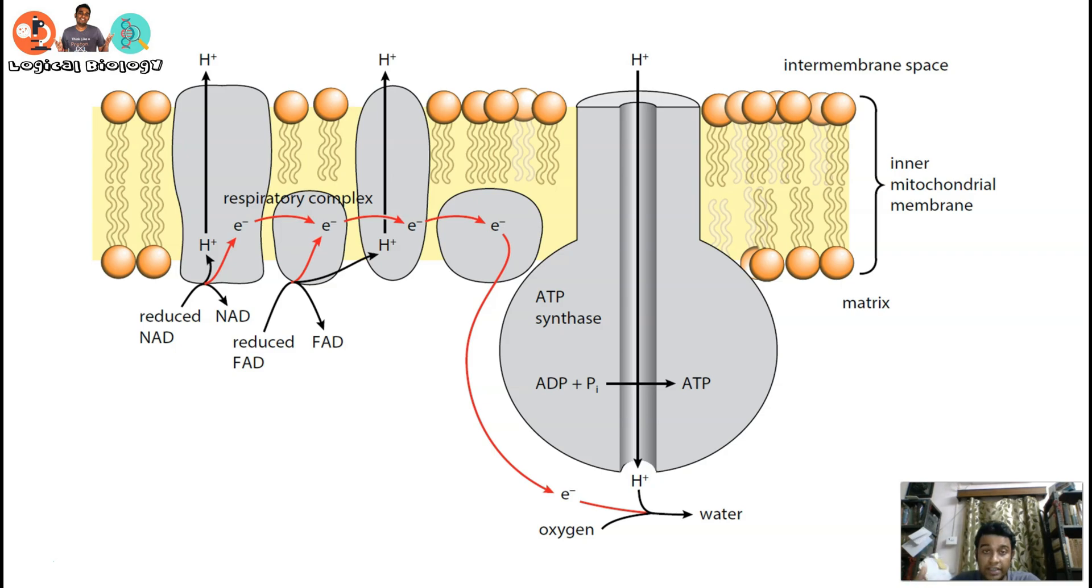Meanwhile, the moment you develop a proton gradient into the intermembrane space - because you keep sending the protons, the moment oxidation happens - you generate protons and keep sending them into the intermembrane space of the mitochondria.